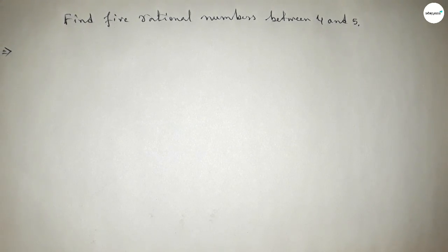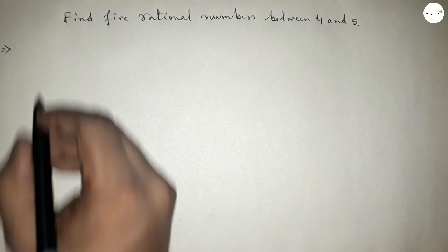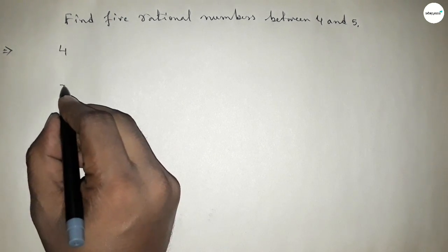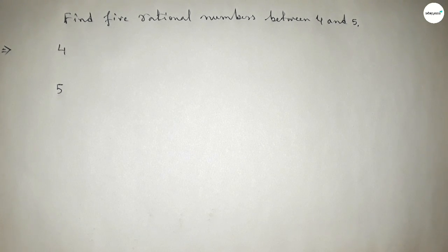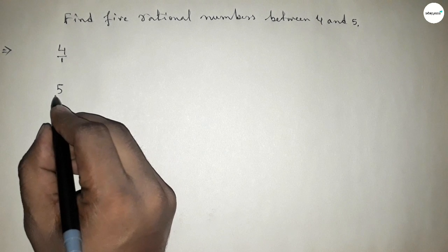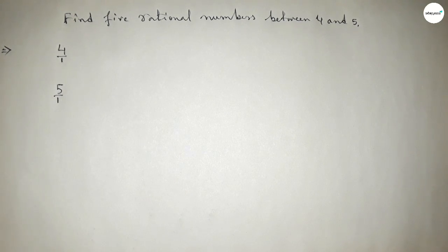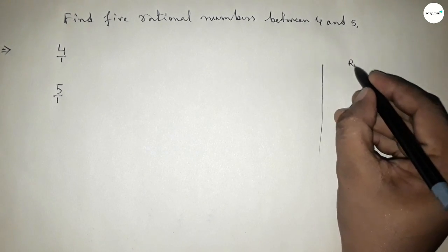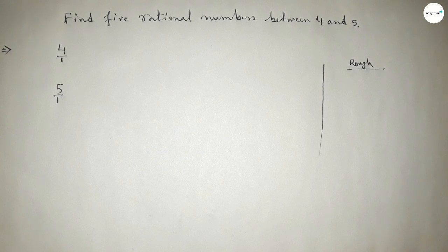First, write the given numbers: four and five. Next, we can write four as 4/1 and five as 5/1. Now some important notes: the denominators of both are equal.